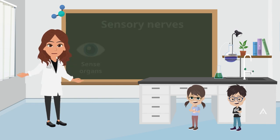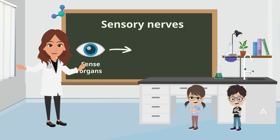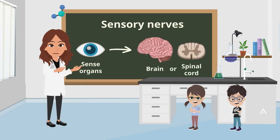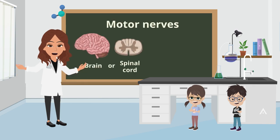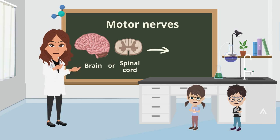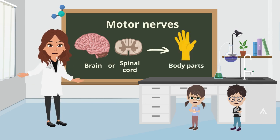That's right. The sensory nerves carry signals from our sense organs to the brain or spinal cord. On the other hand, the motor nerves carry signals from the brain or spinal cord to our muscles or other body parts.